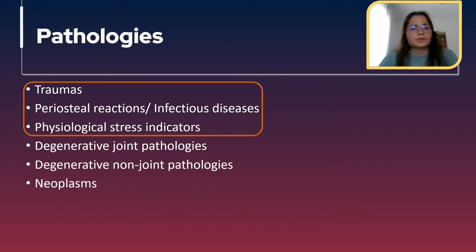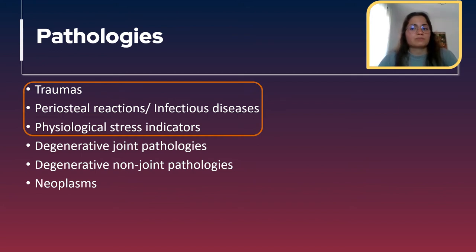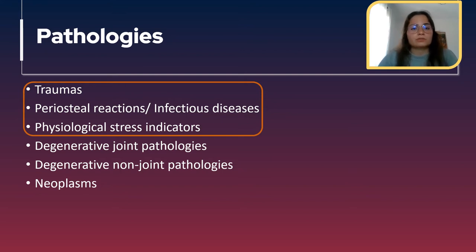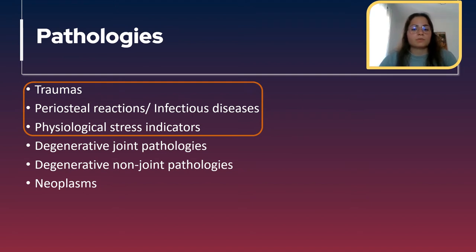Now we are going to dive into the pathologies that can appear in the skeleton. It's kind of hard to put every pathology in a specific category and there are different classifications depending on the authors, but the categories I was taught are: traumas, periosteal reactions and infectious diseases, physiological stress indicators, degenerative joint pathologies, degenerative non-joint pathologies, and neoplasms.